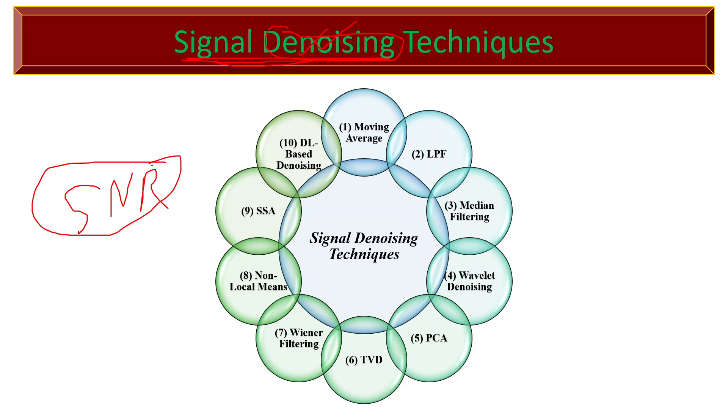Signal denoising techniques can be applied to various types of signals including audio signals, image signals, time series data, and more. The choice of denoising technique depends on the characteristics of the noise, the nature of the signal, and the specific requirements of the application.